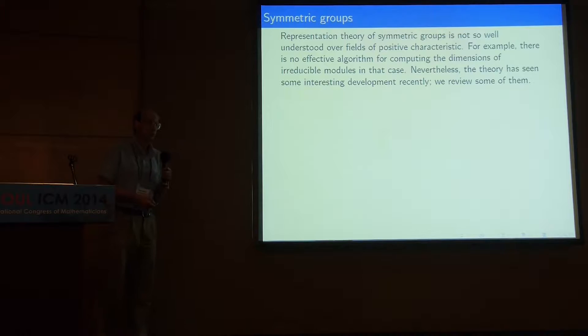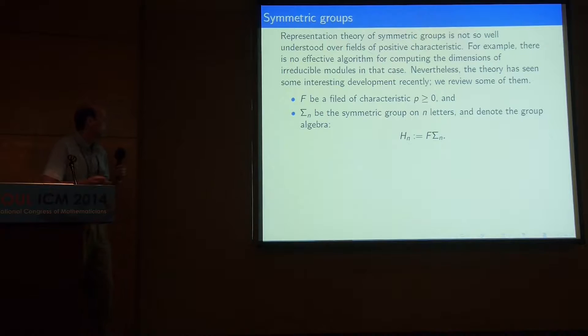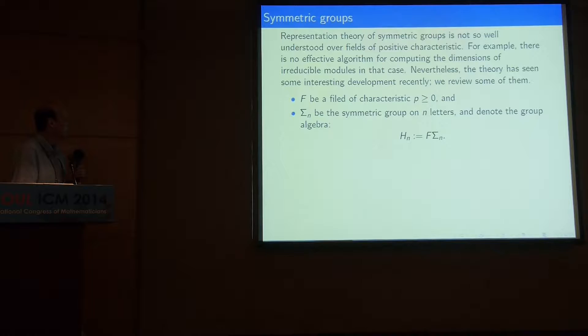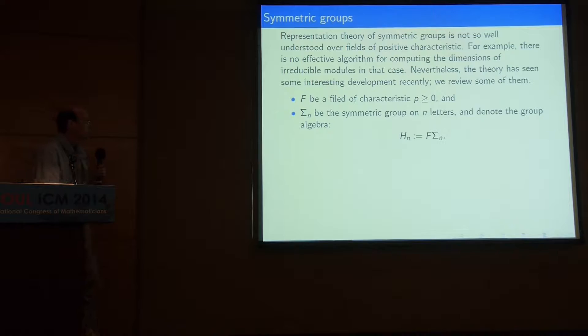These developments reveal some interesting and fairly deep connections to theory in other areas. Whenever possible, I opted for more basic objects, so if there is a choice between a Hecke algebra and a symmetric group, I will always choose the symmetric group. F will be the ground field of arbitrary characteristic, but I will only say something interesting for the case where P is positive. Sigma_N will be the symmetric group on N letters. From the very beginning, I want to introduce the group algebra H_N, and the goal is to understand irreducible H_N modules.